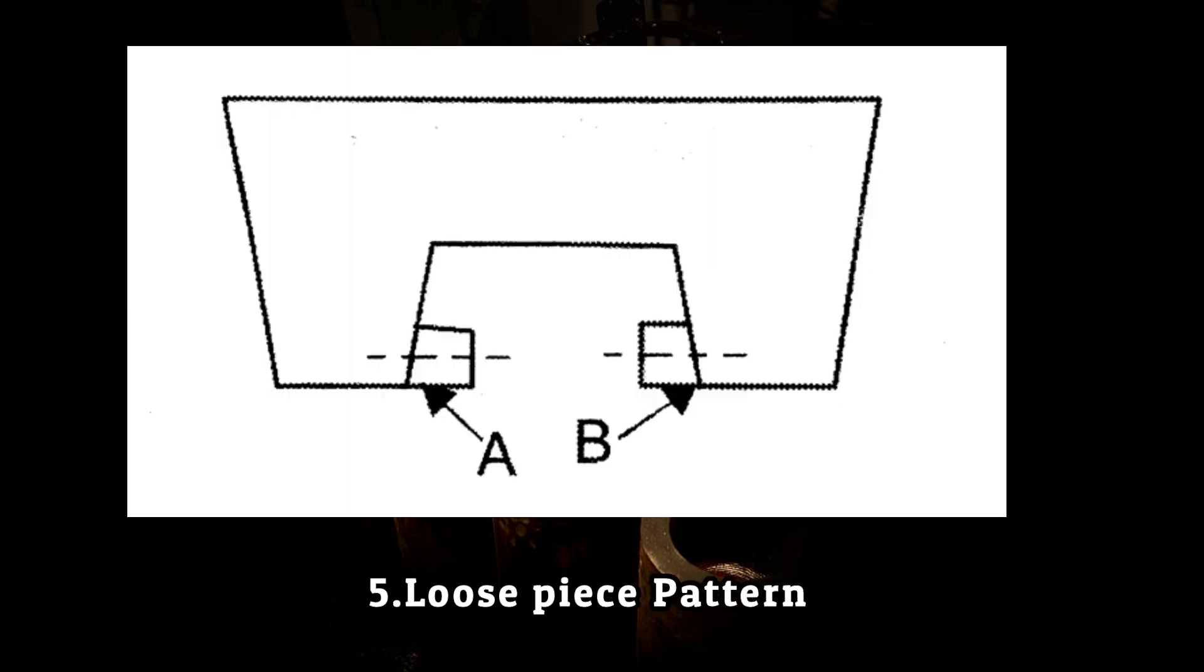Fifth is loose piece pattern. When removal of a pattern is impossible due to an extended surface at either the upper half or lower half, the extended part is made as a loose piece. This extended part can be removed first before removal of the whole pattern. This makes easy removal of the pattern without affecting the cavity.